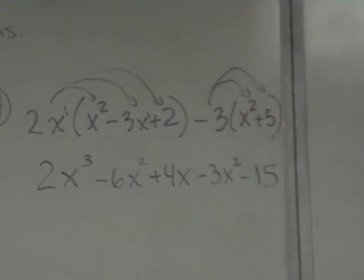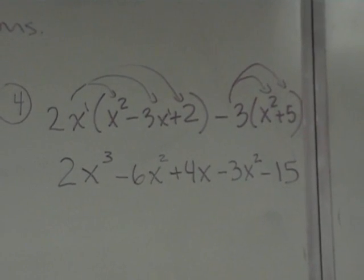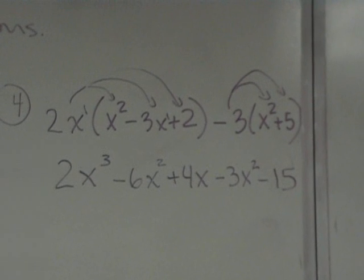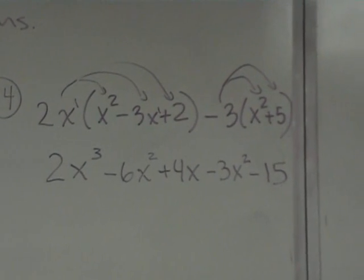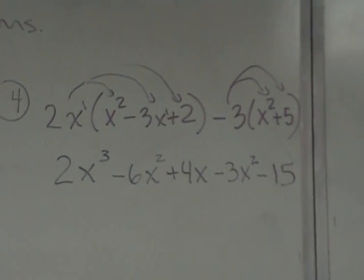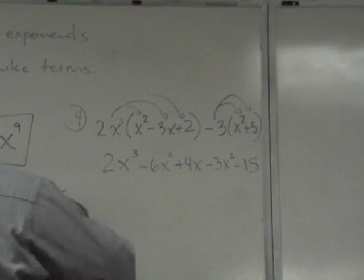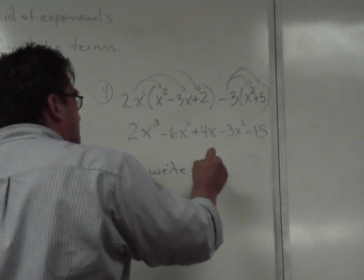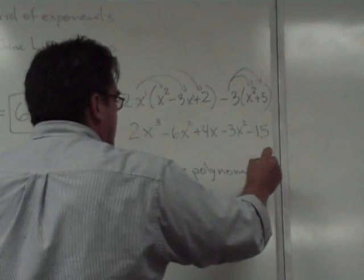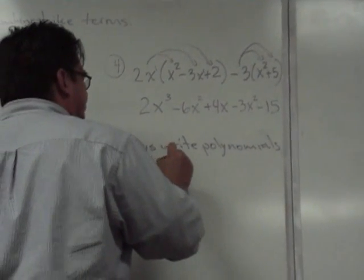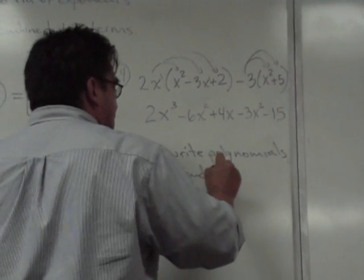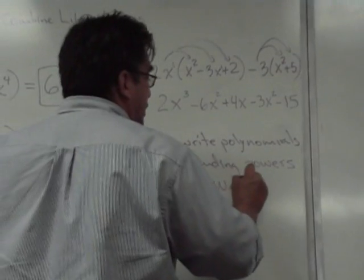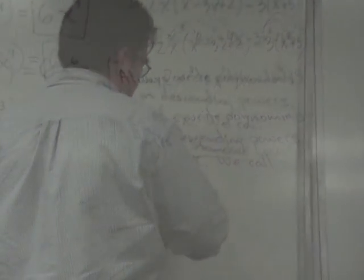Now you got rid of the parentheses. Now you're going to look at - you can combine like terms. Now here's something I didn't tell you. I failed to mention this. You always write polynomials in what we call standard form. Always write the highest powers of x first. Write the powers of x in descending order. We call this standard form.